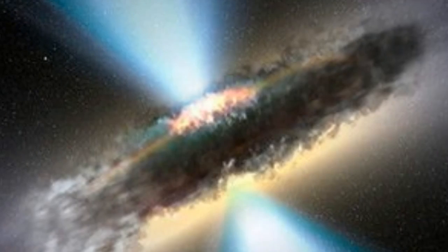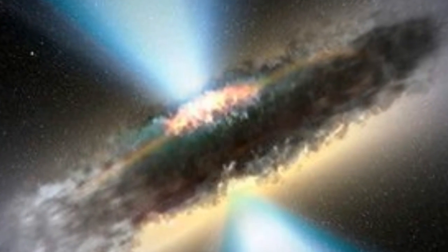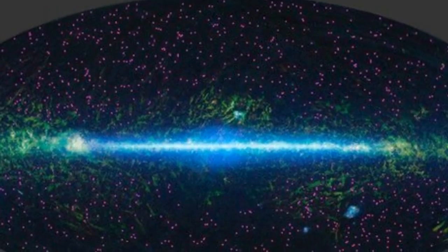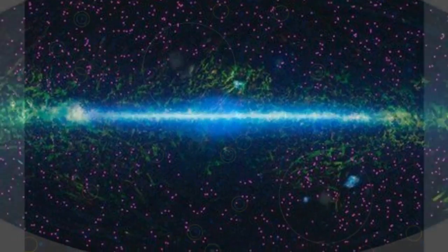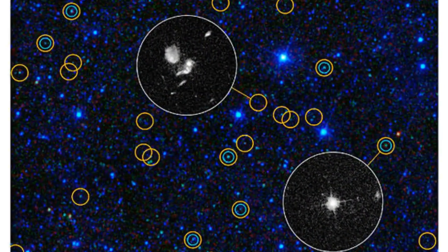But WISE can see in wavelengths correlated with heat, seeing for the first time some of the brightest objects in the universe. The haul will help astronomers work out how galaxies and black holes form.